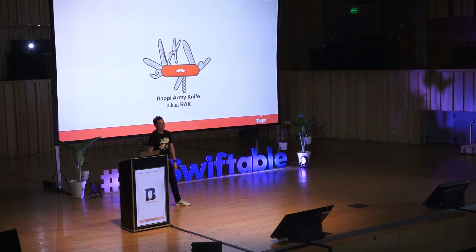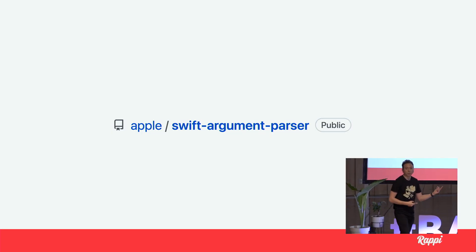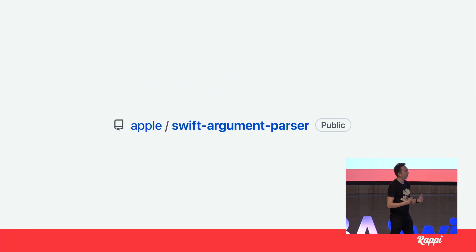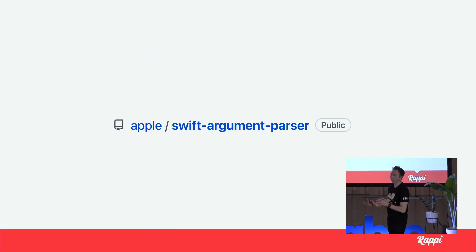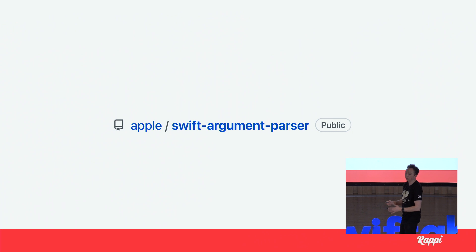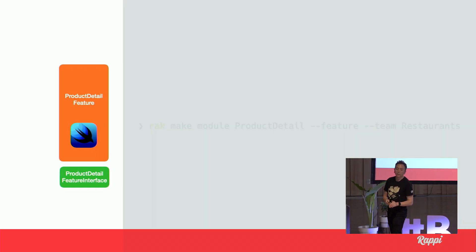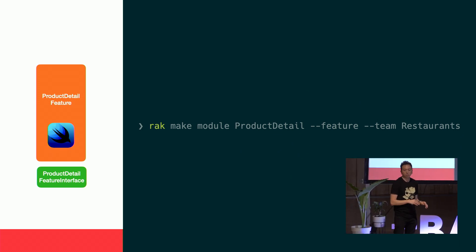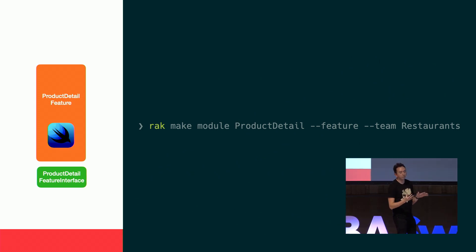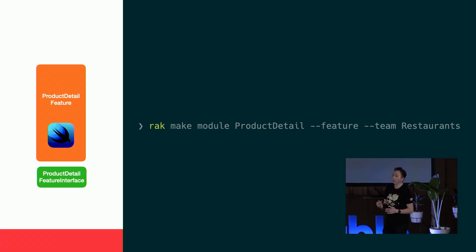We wrote a command line tool called Rappi Army Knife, written entirely in Swift — we call it Rack for short. If your team would benefit from a command line tool, I'd recommend this library because it makes it very accessible to use your existing Swift knowledge to automate things like this. In our case, we built a command to create these pairs of modules. We just tell our tool to create a module — in this case called product detail — specifying it as a feature type and including the team name to track code ownership.